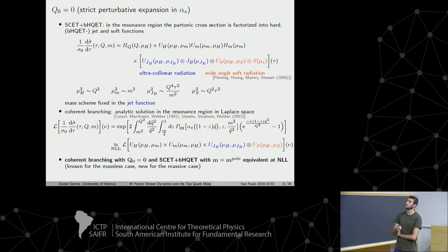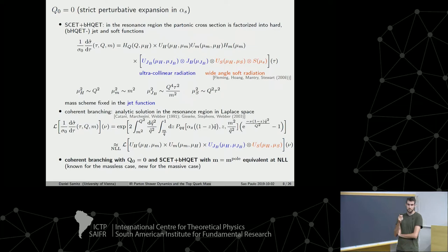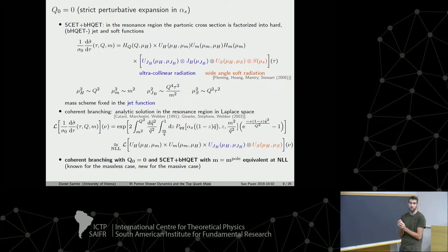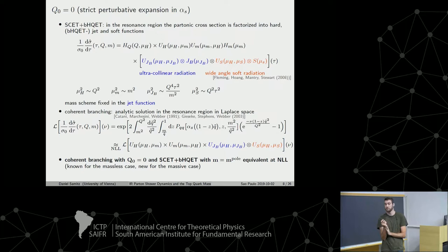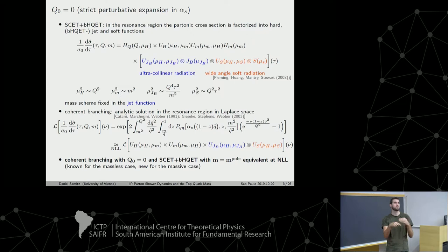Our first step is to understand how to relate the coherent branching formalism to analytic QCD calculations. In the QCD factorization theorem, there is a soft function describing large-angle soft radiation, a jet function describing ultracollinear radiation — radiation from gluons soft in the top rest frame but boosted along with the top in the lab frame — and evolution functions taking quantities from one renormalization scale to another with logarithms resummed. Importantly, the mass scheme in this calculation is fully fixed in the jet function, where you have full control over the renormalization scheme.